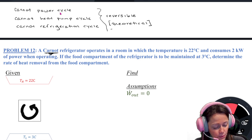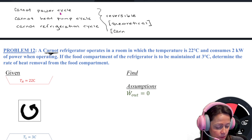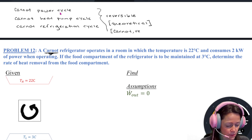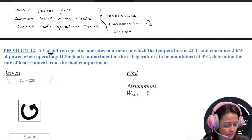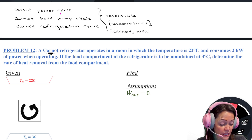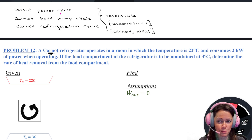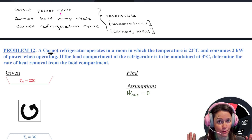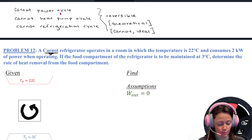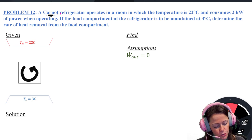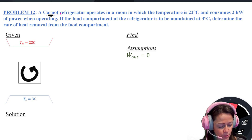When you think of reversible, you're thinking Carnot, theoretical, ideal. Or you see words like maximum or minimum. You're thinking: this is a reversible cycle. So when I calculate the performance parameter, it's only going to be dependent on the temperatures. Those are your key words. So you have a Carnot reversible refrigeration cycle — refrigerator operates in a room where the temperature is 22 degrees and consumes 2 kilowatts of power. The food compartment is to be maintained at 3 degrees. Please determine the rate of heat removal from the food compartment.